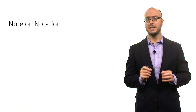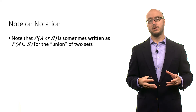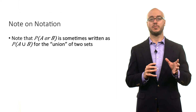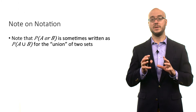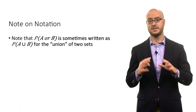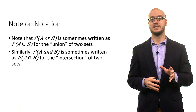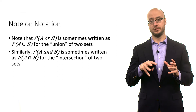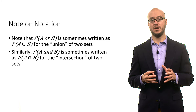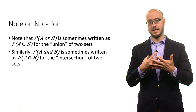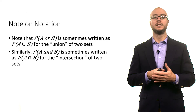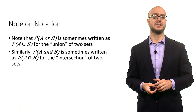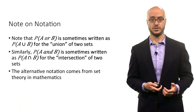Let's note something about notation. The probability of A or B is sometimes written using notation from set theory. You might see the probability of A or B written as P(A ∪ B) — that U refers to the union of two sets, and it means the same thing as 'or.' You might also see the probability of A and B written using the intersection symbol (∩), which refers to the intersection of two sets — that overlap area in a Venn diagram. So P(A ∪ B) is the union, and P(A ∩ B) is the intersection.